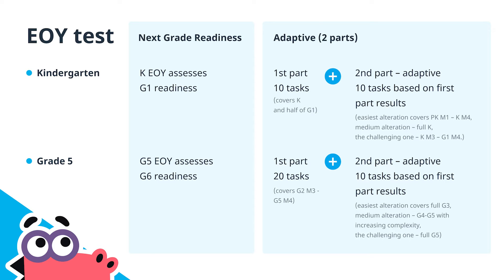The second part consists of 10 questions, but again the difficulty of these questions is based on the student's performance in the first part. If the student struggled, the second part will focus on topics from the whole grade 3 curriculum. If they performed adequately, the questions will cover topics from grade 4 to grade 5. If they excelled, the questions will cover the entire grade 5 curriculum.